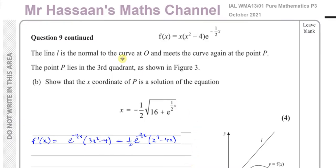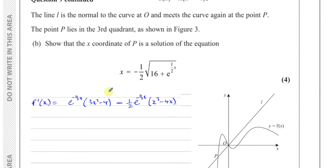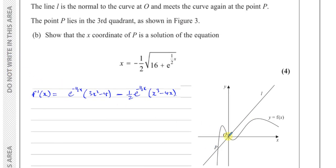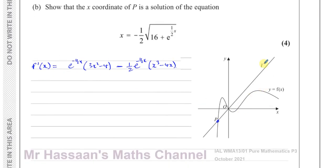Now for part b of question number 9. We have already found the gradient function of f of x. They told us about line L, which is a normal to the curve at O. So this line is perpendicular to the gradient of the curve at the origin, and it meets the curve again at point P. The point P lies in the third quadrant, where both x and y are negative, as shown in figure 3. We need to show that the x-coordinate of P is a solution of x equals negative a half times the square root of 16 plus e to the power of a half x.